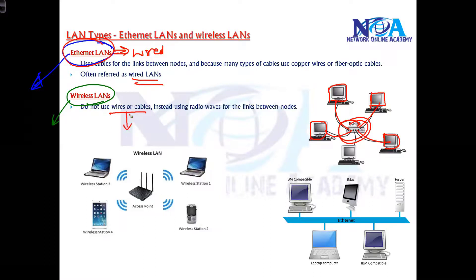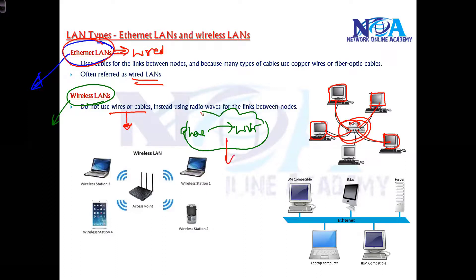The other type of LAN is Wireless LAN. In wireless LAN, we don't use wires or cables. For example, when you connect your phone to a Wi-Fi network, that comes under wireless LAN — something we use in our day-to-day networks. Instead of cables, devices are connected through wireless signals called radio frequency signals, which act as the transmission media for sending information between devices.